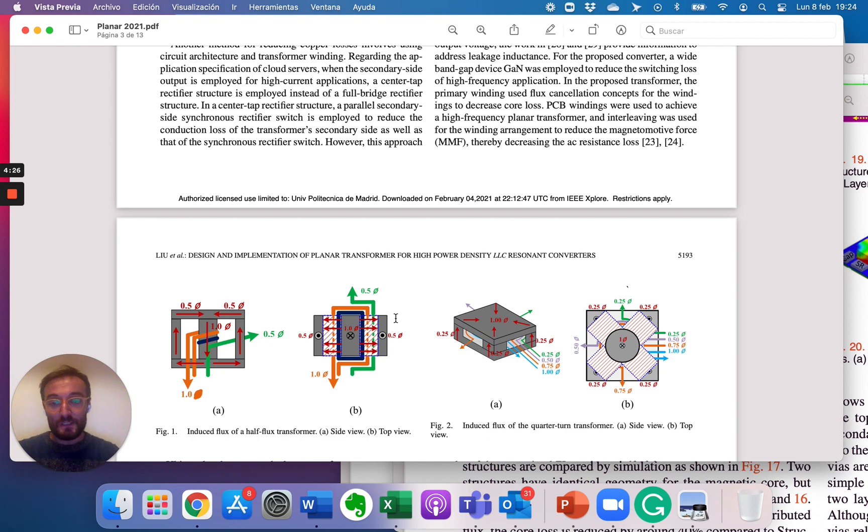But what they propose is, what if instead of putting one full turn in secondary that has a lot of current, we just put half turn. Then you can see here.